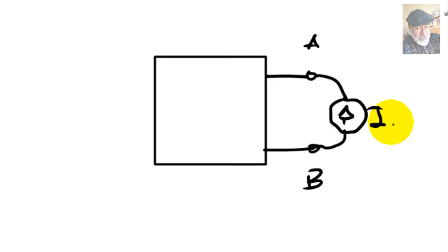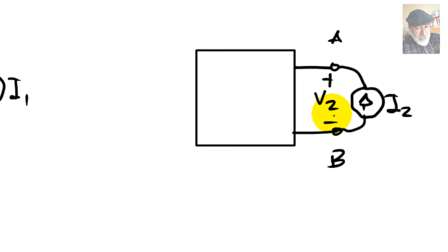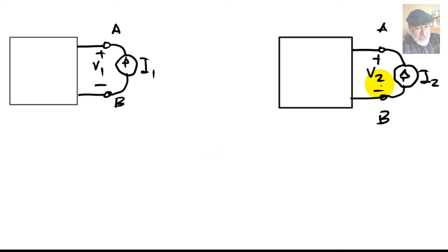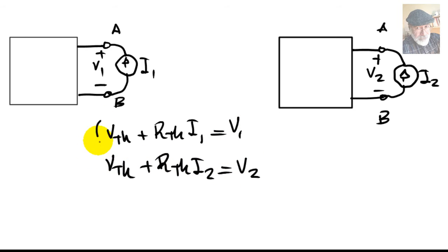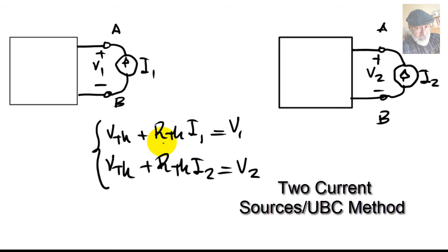In this case, I'm calling that I2, and compute what is the voltage that appears. Of course, each one of those two solutions gives us one linear equation that we need to solve for, this one. And from there, we find V Thevenin and R Thevenin. That is the two current sources method that we have seen in class, detailedly.